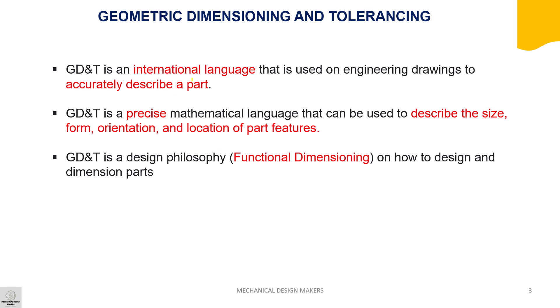GD&T is an international language used on engineering drawings to accurately describe a part. Basically, GD&T is a way for communicating engineering tolerances through symbols. For example, a drawing drawn by a Chinese design engineer could be read by an Indian design engineer. GD&T is a precise system used to describe the size, form, orientation and location of a part.